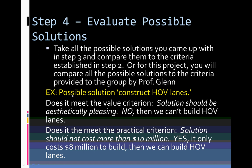For our Austin traffic example, if a possible solution was to construct HOV lanes — high occupancy vehicle lanes, which allow people with more than one person in the car to use those lanes — we would ask: does it meet the value criterion? If one criterion was that the solution should be aesthetically pleasing, the answer would be no. HOV lanes are not aesthetically pleasing; they take up more of the highway and may take up people's yards. So technically, if it doesn't meet that criterion, we can't build the HOV lane. But does it meet the practical criterion that the solution should not cost more than $10 million? If it only costs $8 million to build, then we could build it based on that criterion.